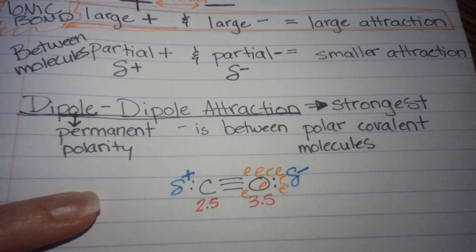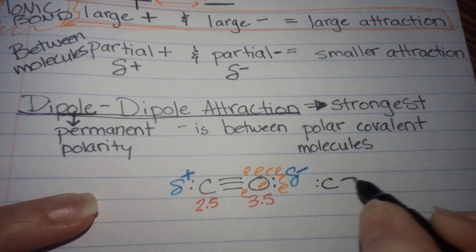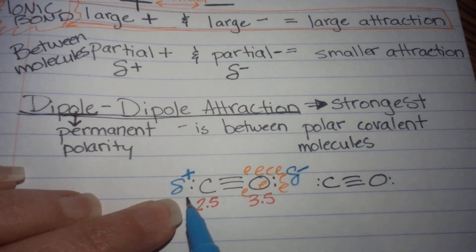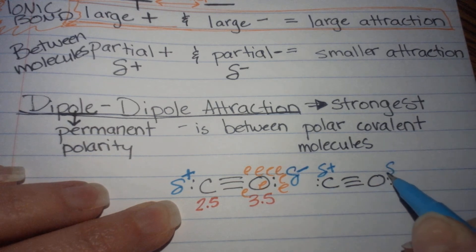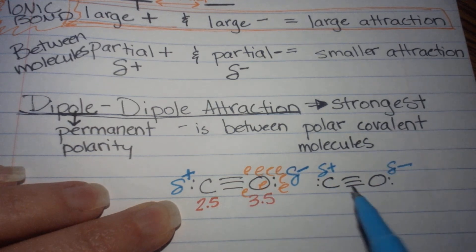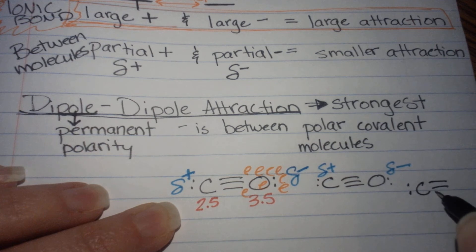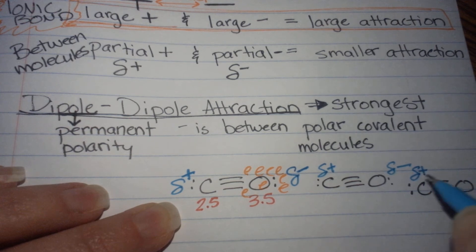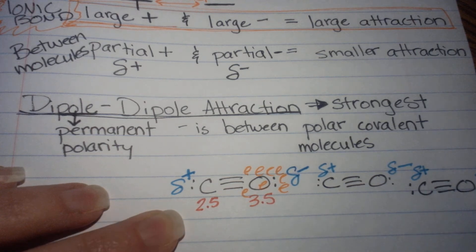What does that mean for between polar covalent molecules? This is one molecule. If I have another one, it has a partial positive on the carbon again, and it's going to be attracted to the partial negative of the oxygen. They line up in a kind of pattern — another molecule of this gas will have its partial positive attracted to the partial negative, and so they interact in that way.